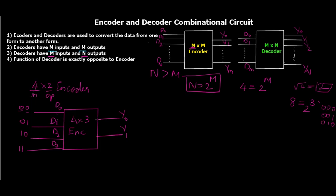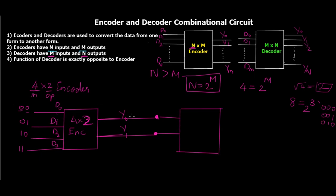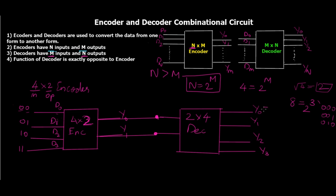Once the data is transferred to another circuit, the decoder comes into picture. Because we had a 4x2 encoder, the decoder is going to be a 2x4 decoder — exactly opposite. It takes the two outputs from the encoder as inputs. The decoder knows that for input 00, Y0 has to be activated: Y0 equals 1, Y1 equals 0, Y2 equals 0, Y3 equals 0.